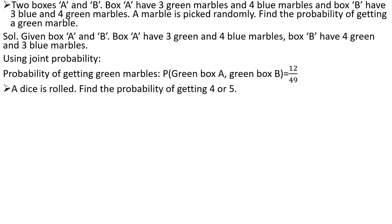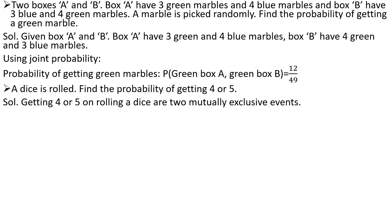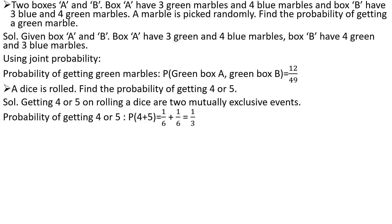Second example: a dice is rolled — find the probability of getting 4 or 5. Getting 4 or 5 on rolling a dice are two mutually exclusive events. Using the addition formula, the probability of getting 4 is 1/6 and the probability of getting 5 is 1/6. So the probability of getting 4 or 5 is 1/6 + 1/6 = 2/6, which equals 1/3.